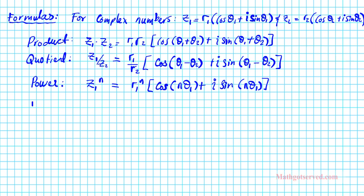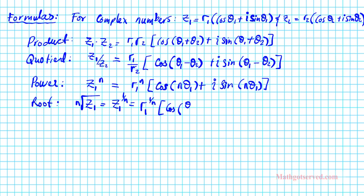We also have the root formula. The nth root of z1, which equals z1 raised to the 1 over n using the nth root property of exponents, can be written as r1 raised to the 1/n times cosine(theta1 over n) plus i sine(theta1 over n). This is the formula for finding the principal root. There are other roots, but this one is just for the principal root.